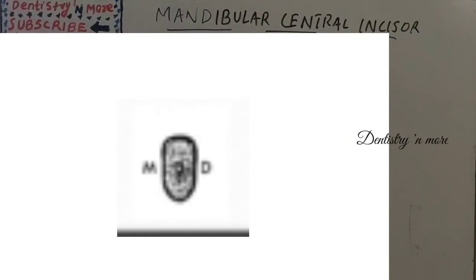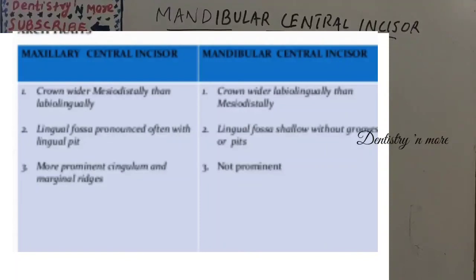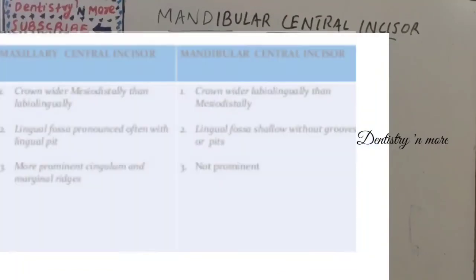A key comparison: in the maxillary central incisor, the crown is wider mesiodistally than labiolingually, whereas in the mandibular central incisor, the crown is wider labiolingually than mesiodistally. In the maxilla, the lingual fossa is pronounced often with a lingual pit; here it is shallow without grooves or pit. Also, the maxillary incisor has more prominent cingulum and marginal ridges, which are not prominent in the mandibular central incisor.